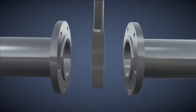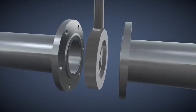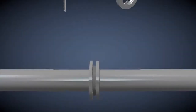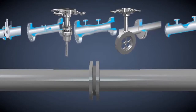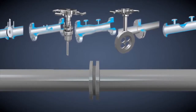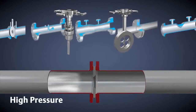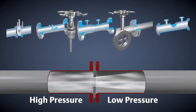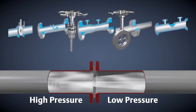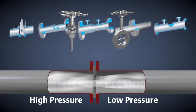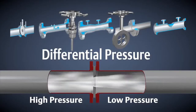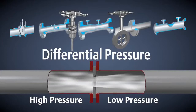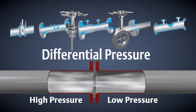Primary element selection is dependent on process conditions. All of these different primary elements have one thing in common: they constrict the flow in a pipe, causing a pressure drop from one side to the other. The difference in pressures is the differential pressure. The square root of DP is proportional to the flow rate.